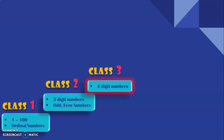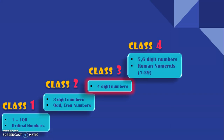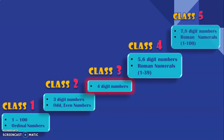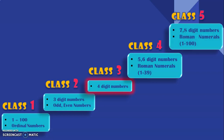In class 3, we will be dealing with 4-digit numbers, that is numbers above 1000. In class 4, we will deal with 5 and 6-digit numbers and also learn to write Roman numerals from 1 to 39. And in class 5, we will deal with 7 and 8-digit numbers and Roman numerals from 1 to 100.